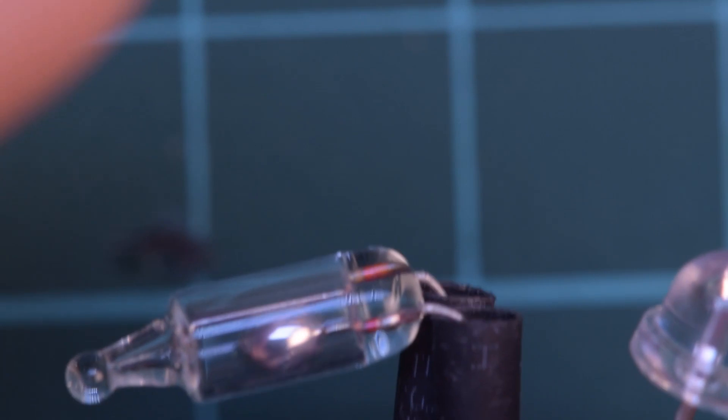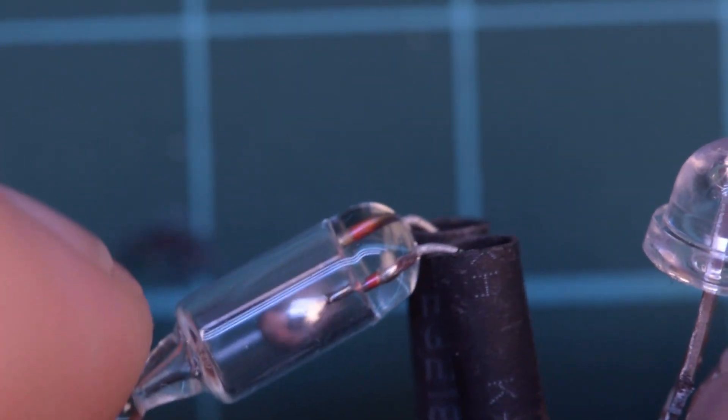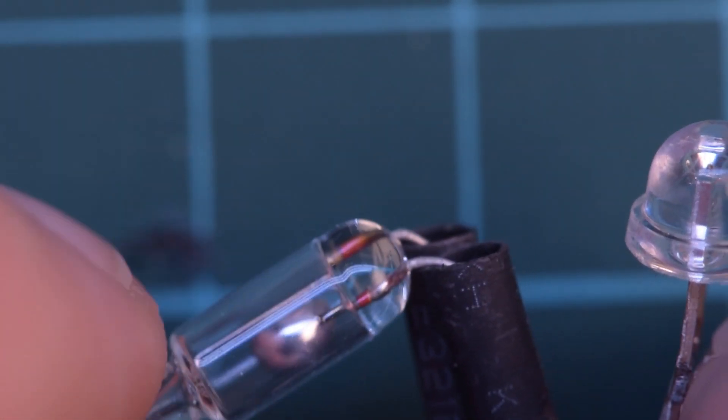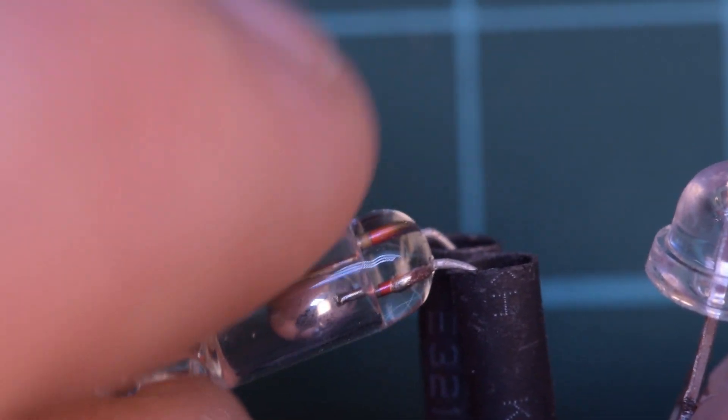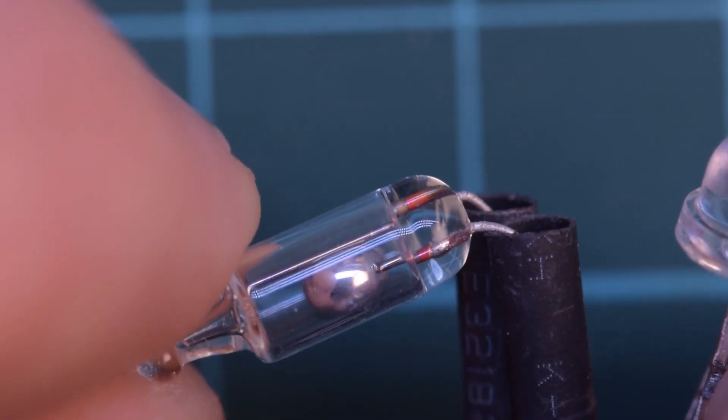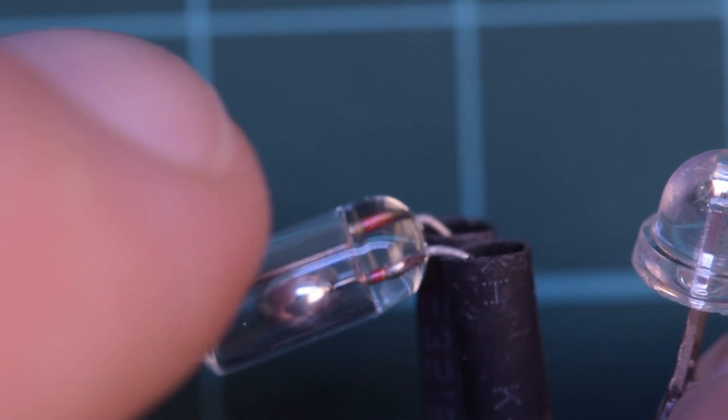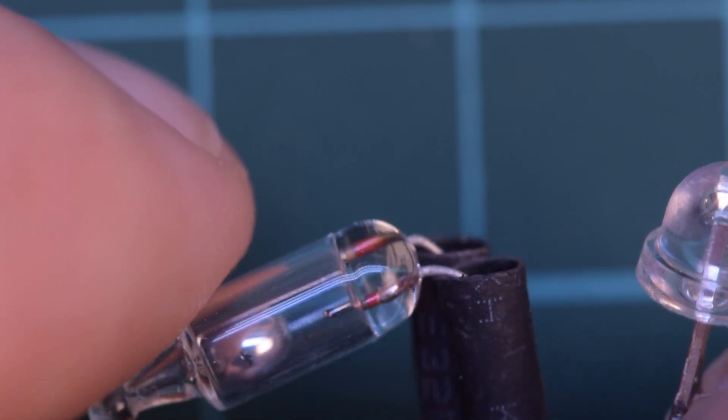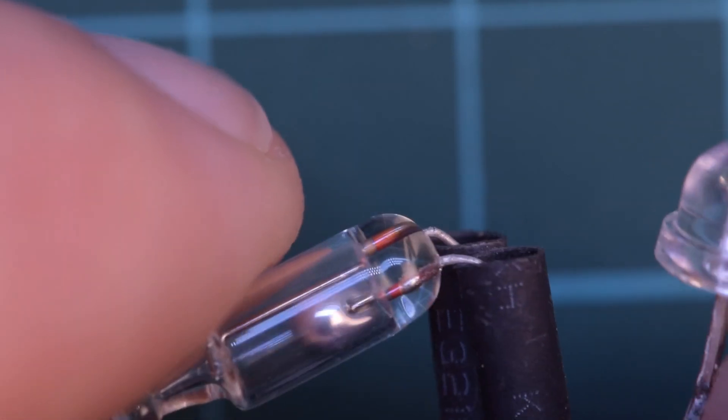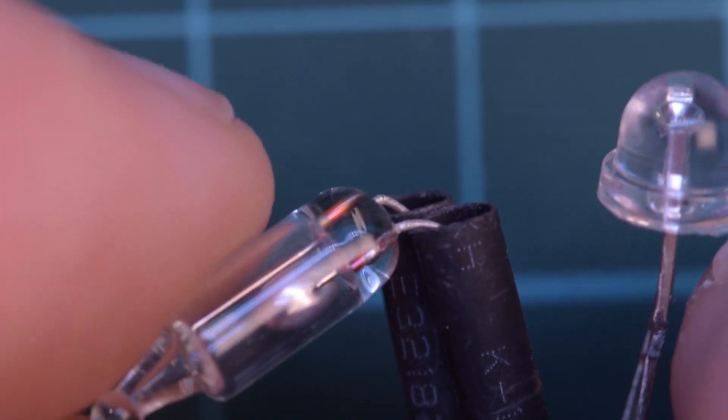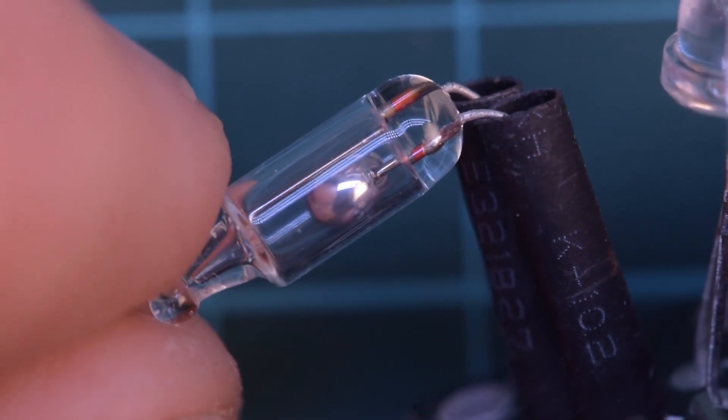However if you just discard these, if you just throw these away, this mercury could easily break out of this glass, especially with other trash being thrown on top. And then with rain it can seep into drinking water and if this seeps into drinking water it can easily contaminate it.